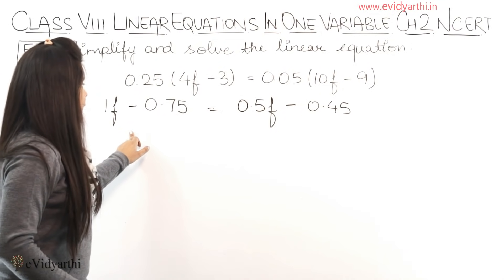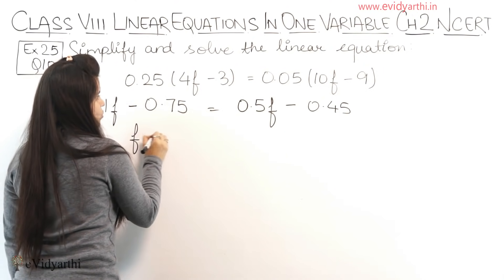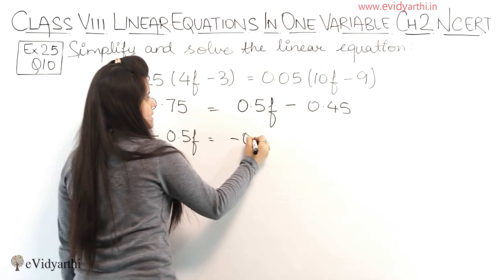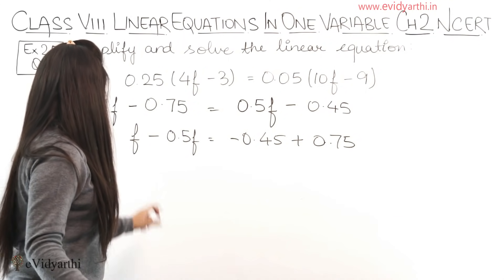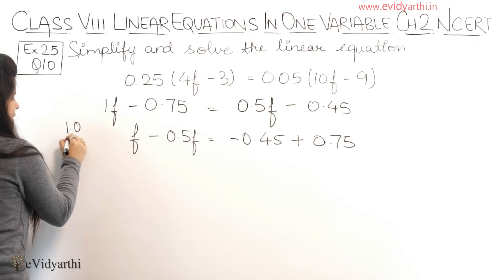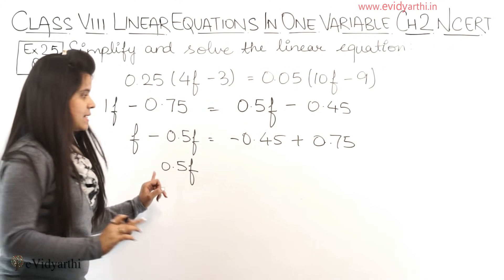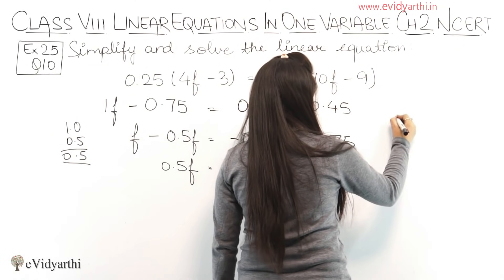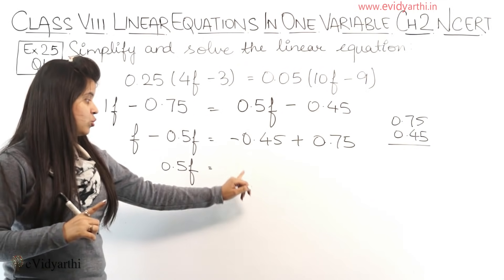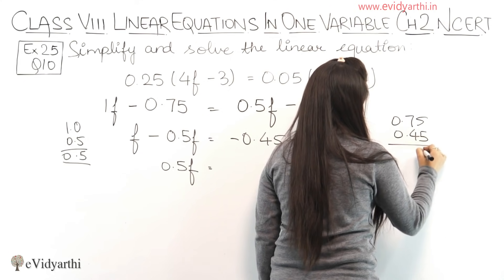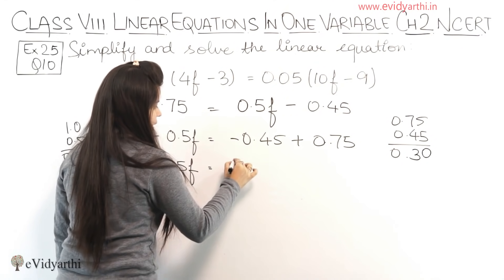Now let's come to the next step. We'll collect f terms together and numbers together. So we have f minus 0.5f equals to minus 0.45 plus 0.75. Now 1 minus 0.5: 1.0 minus 0.5 is 0.5f. Since 1 is larger, it will be plus. Then minus plus minus, so we have to subtract 0.45 from 0.75. Remember 0.75 is the larger number, so it will be plus. 5 minus 5 is 0, 7 minus 4 is 3. So we have 0.30.